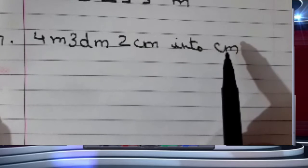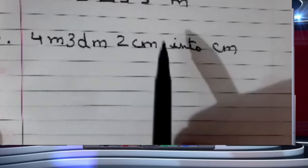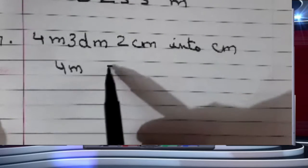Now come to Question number 7. We have to convert 4 meter, 3 decimeter, 2 centimeter into centimeter. It means I have to convert all the units to centimeter first. 2 centimeter is already in centimeter only. So we have to just convert first 4 meter into centimeter, and then convert 3 decimeter into centimeter.